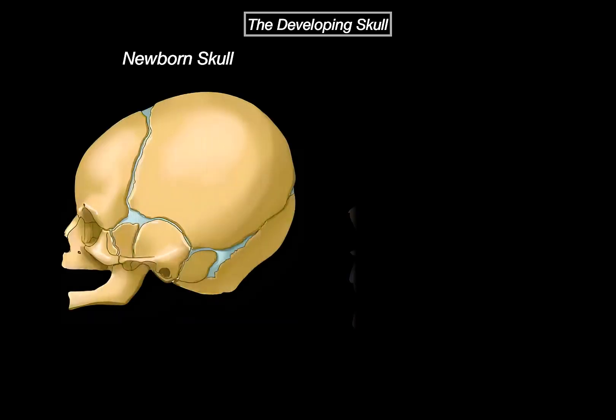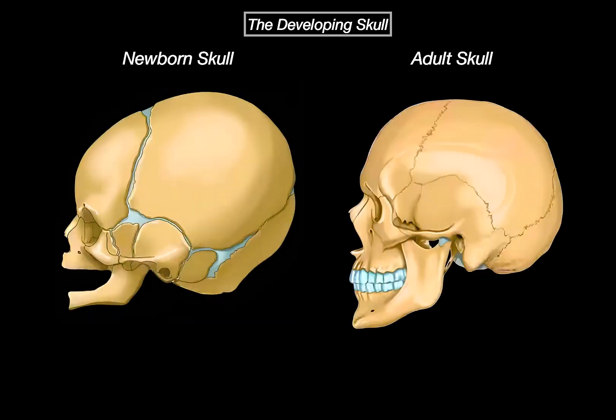So let's start with the developing skull, by adding a newborn skull and an adult skull. The newborn skull on the left represents about 0–1 months old, and the adult skull around 25 years old.